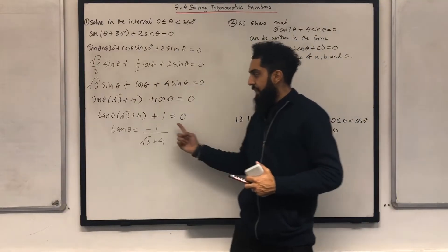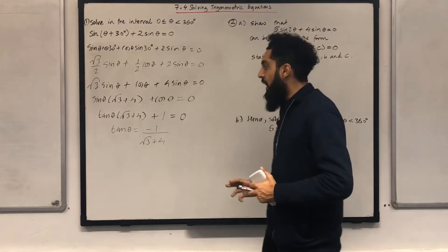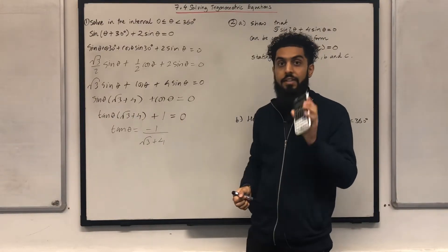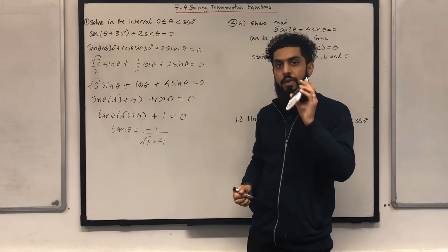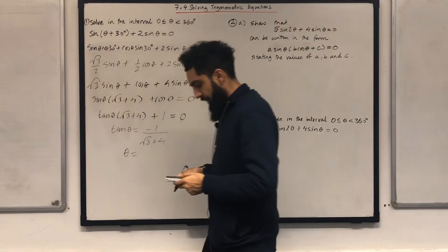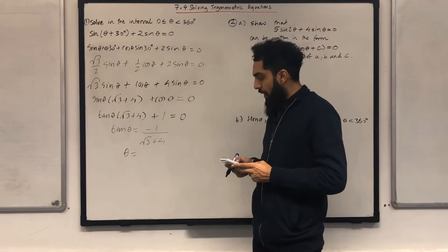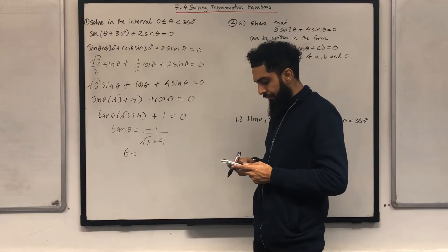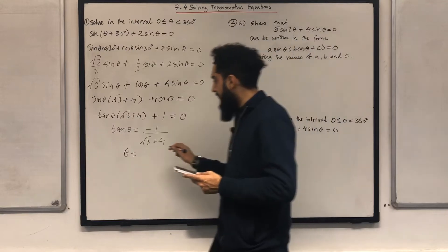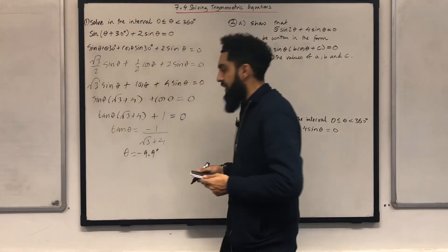I need to solve this trigonometric equation. What I need to do first of all is calculate tan inverse of this particular fraction using my calculator, making sure my calculator is on degree mode. I press shift, tan, and type in the fraction minus 1 over square root 3 plus 4. The value I obtain is minus 9.9 degrees to one decimal place.